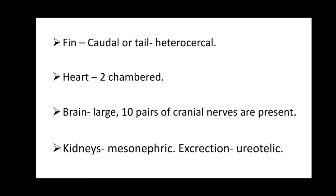Kidneys are of the mesonephric type. As we know, pronephric, mesonephric, and metanephric kidneys develop during embryonic stages — mesonephric appearing around the fourth to fifth week. In fish, mesonephric kidneys are retained. Excretion is ureotelic. There are three types of excretion: ammonotelic (excretory product is ammonia), ureotelic (excretory product is urea), and uricotelic (excretory product is uric acid). You can see here the heart and the placoid scales.